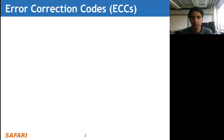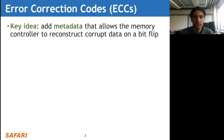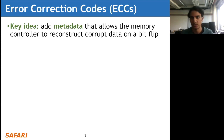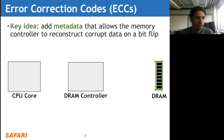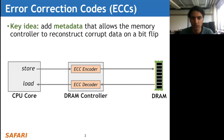First, I'm going to talk a little bit about error correcting codes. The key idea of error correcting codes is to add metadata to the data that you're loading and storing from memory in order to allow the memory controller to reconstruct corrupted data whenever an error occurs - in this case, an error could just be a simple bit flip. In a typical system, we have a CPU core and a DRAM controller which typically lie within the same die, within an SoC or CPU package, and then DRAM which typically lies off chip.